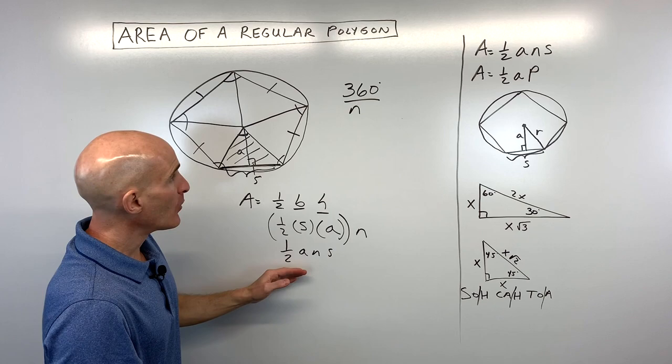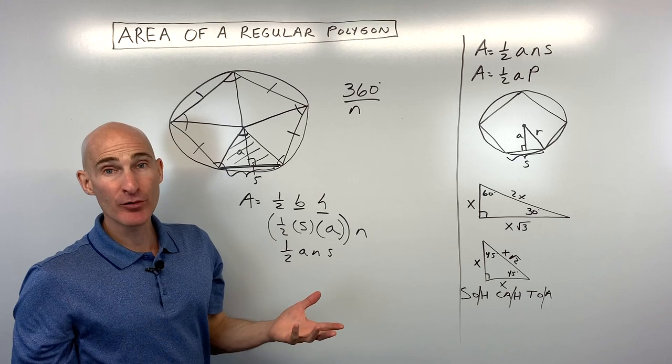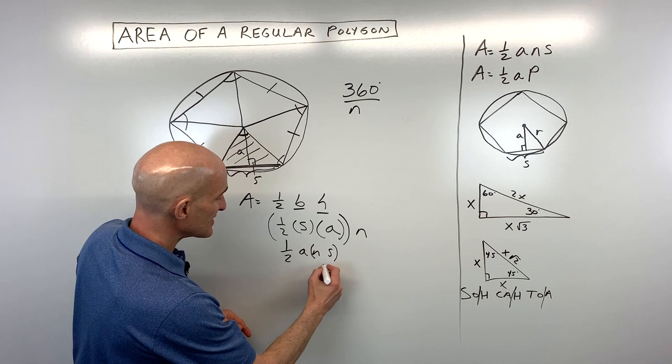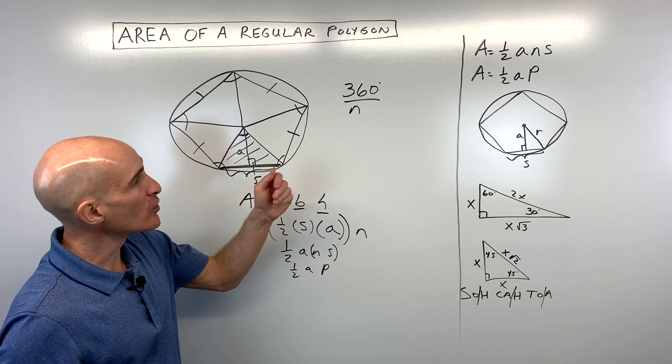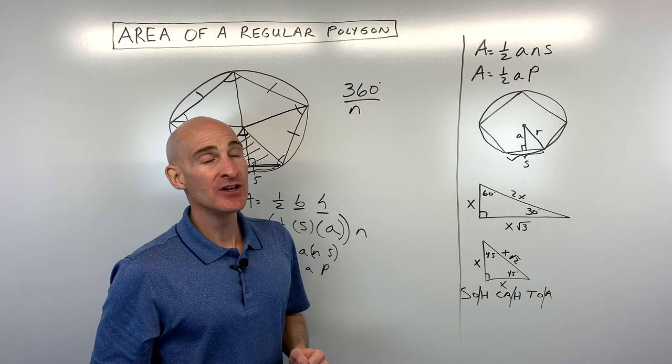The second formula is area equals one-half apothem times perimeter. We know that side length multiplied by the number of sides is the perimeter. So N times S is the same as P, giving us one-half A times P. When doing these problems, we may need to use special right triangles like 30-60-90 or 45-45-90, as well as trigonometry — sine, cosine, and tangent. Let's jump into four examples.